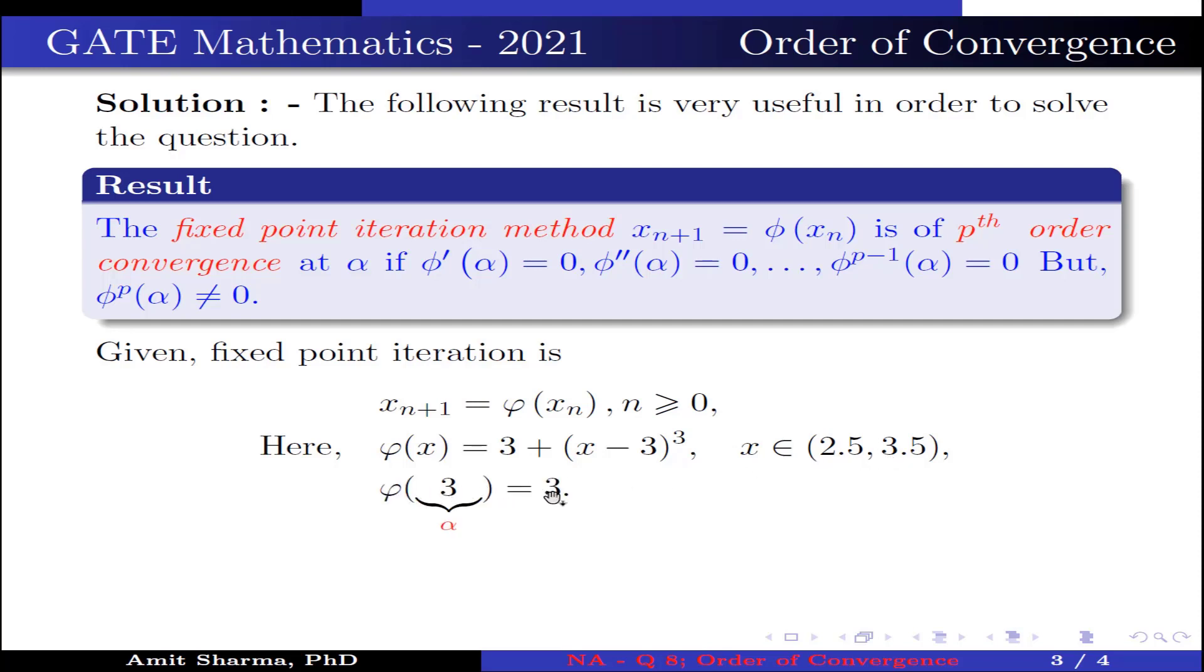Now, ψ(3) = 3. Here we take 3 as α. This implies 3 is a fixed point.